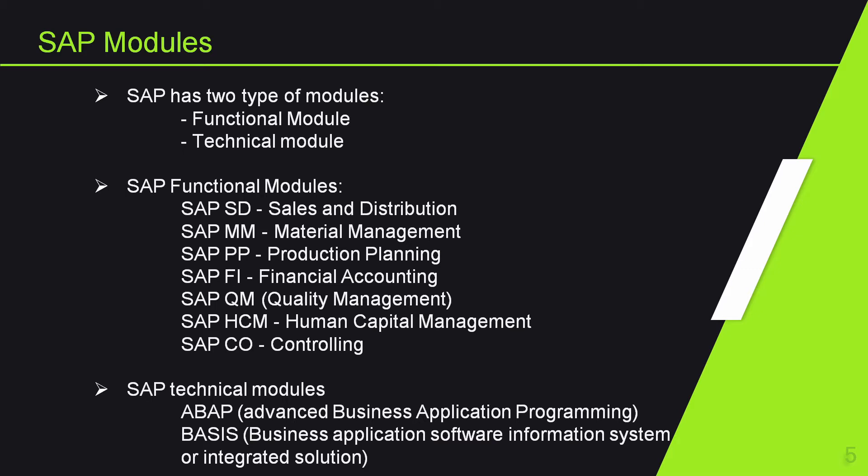SAP SD, Sales and Distribution, is a functional module. It handles all activities related to sales and distribution of an organization. For example, a company called XYZ has a sales department that makes deals with customers and delivers material to them. All these cycles are recorded in the SAP SD module. The SD module can be integrated with other modules such as Material Management, Financial Accounting, Production and Planning, etc.